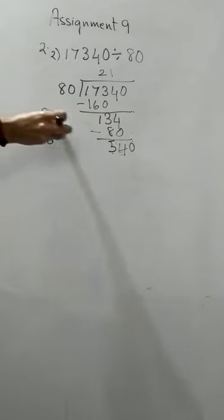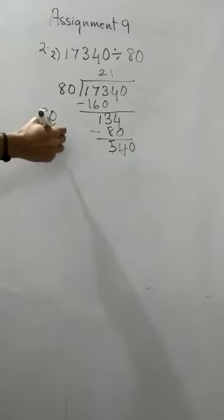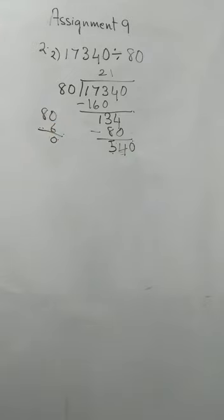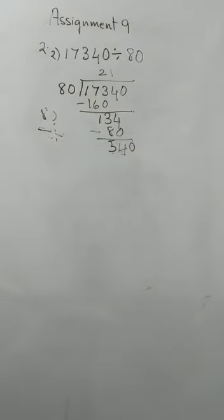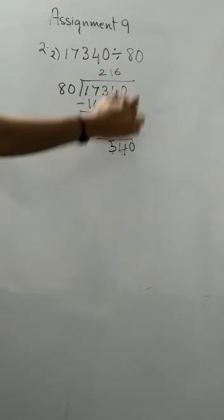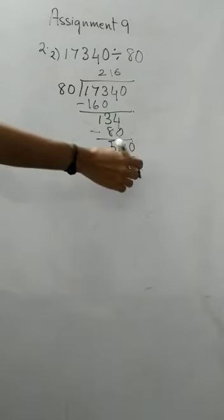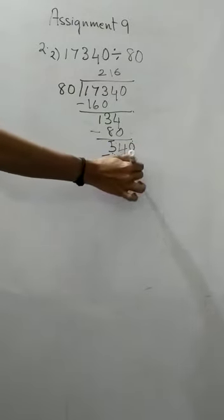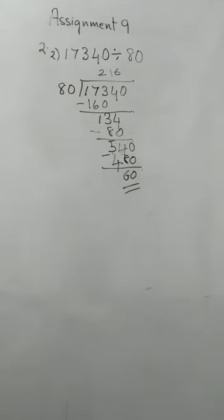8, 6s are, we will try. So 8, 6s are 48, right? So 4, 8s are 48, we can try. 4, 8s are 48, we will write here, minus, we will get 60. 60 is less than 80, so with this the division will stop here. So the first 2 questions I have done, 3 and 4, you will do as homework.